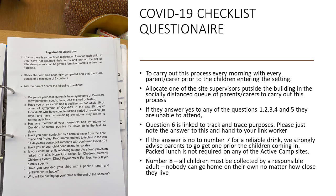Number eight: all children must be collected by a responsible adult. Parents need to be aware that no child can go home on their own, no matter how close they live to the play camp. If an adult does not turn up to collect a child, you must phone the emergency contact numbers and ensure that someone does come to pick up the child.